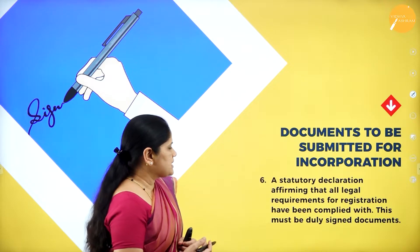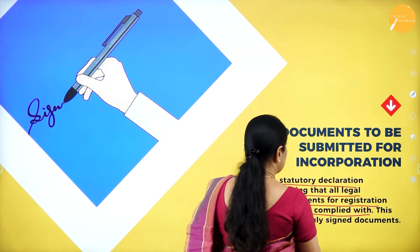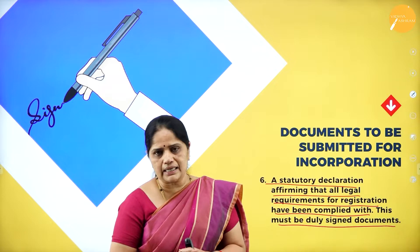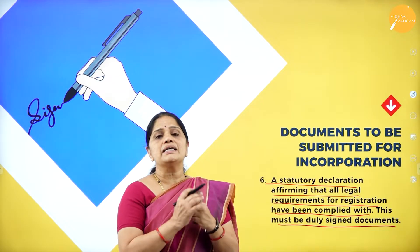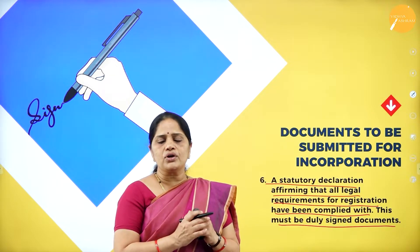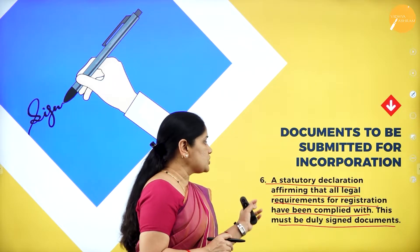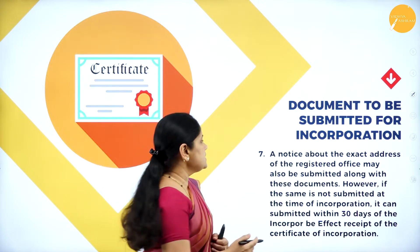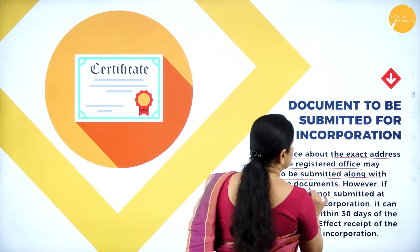The next document to be submitted is a statutory declaration affirming that all legal requirements for registration have been complied with. This must be a duly signed document. In the statutory declaration, the promoters say that they have complied with all the rules and regulations laid down by the registrar of companies. They have followed all the rules and procedures and will sign this document called the statutory declaration.